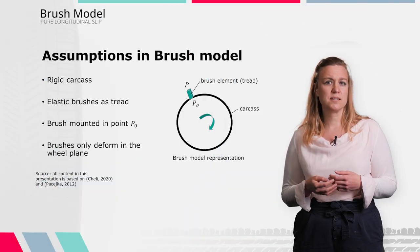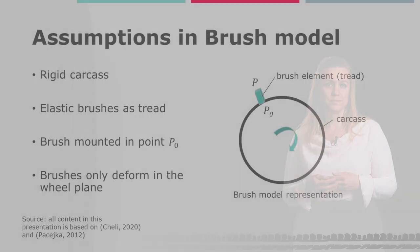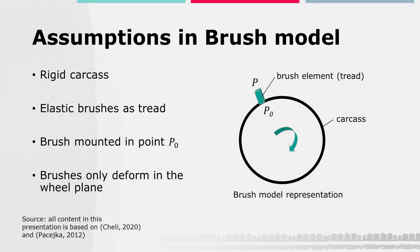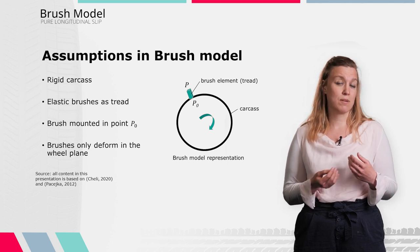To reduce the complexity and gain basic understanding of the fundamental mechanical principles, we simplify by making the following assumptions. First, we assume that the tire's carcass is a rigid structure. On this rigid structure, flexible elements that describe the tire tread are mounted at point P0. These elements are called brushes or bristles. They are flexible and have a certain stiffness. These brushes can only deform in the wheel plane, but not in the radial direction. Note that since the carcass is assumed to be rigid, the deformation of the brush in this model accounts for the overall deformations, representing locally in the contact the deformation of the real carcass and the tread together.